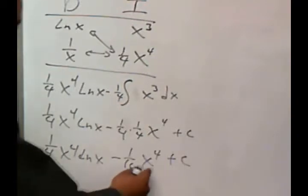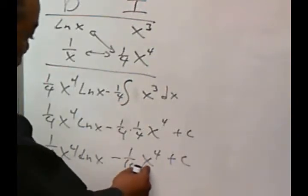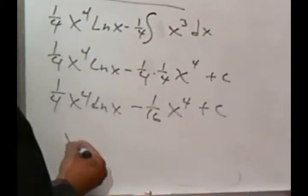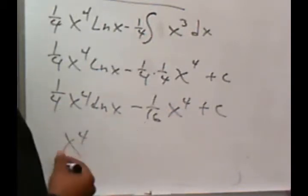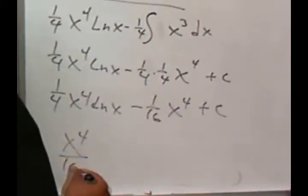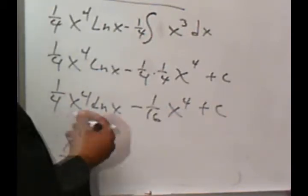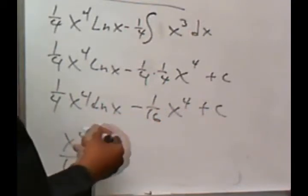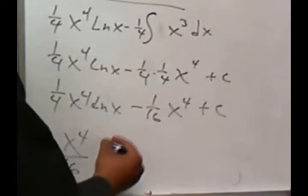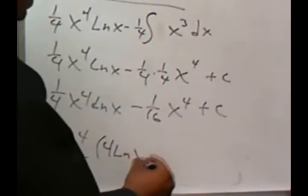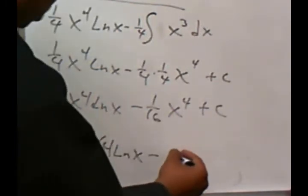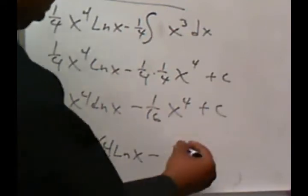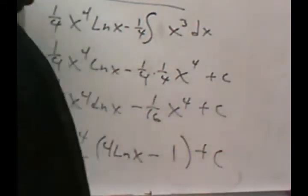Now we do have a common factor of x to the 4th, and the common denominator will be 16. Taking that out — so taking out 1 over 16 is like multiplying everything by 16 — this becomes 4 times natural log of x, and this becomes a negative 1. So we get x to the 4th over 16 times the quantity 4 natural log of x minus 1, all plus c.